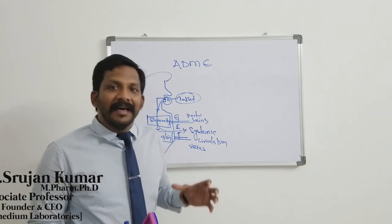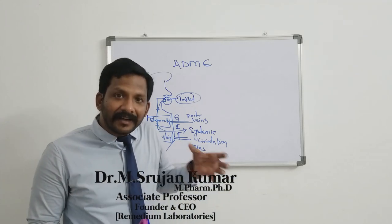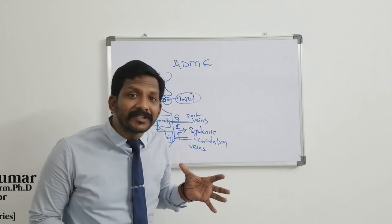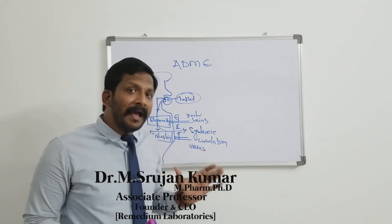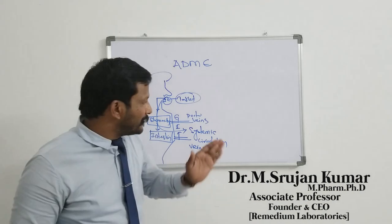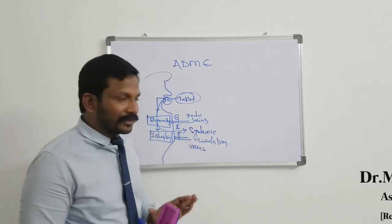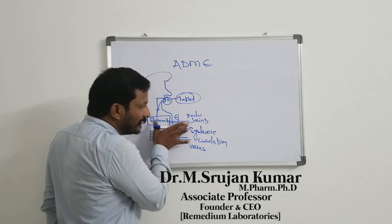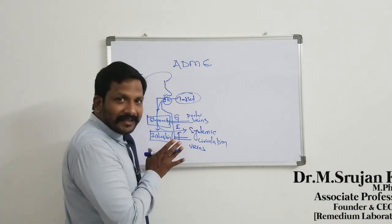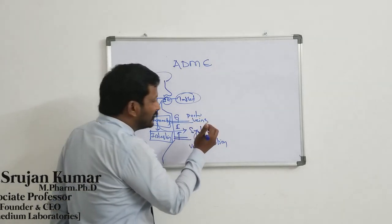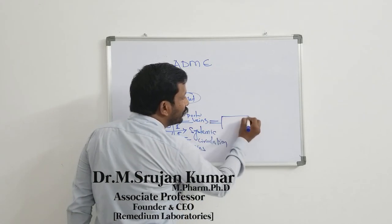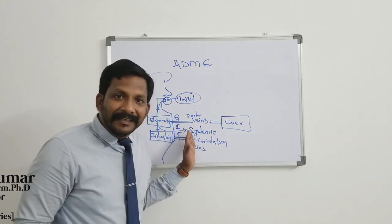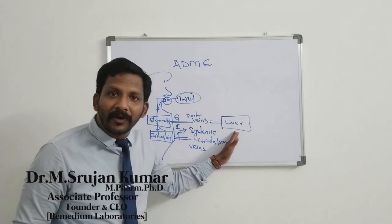What is distribution? Reversible transfer of drugs between blood and other tissue compartments. After permeating through this barrier, it will enter into systemic circulation through your portal vein. This portal vein will be leading to your tissue compartment called as liver.